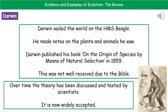He was saying that in natural selection we share a common ancestor with monkeys. People interpreted that and said we're not like monkeys, so they put his head on a monkey's body. But over time, this theory has been discussed and tested by scientists, and that's why natural selection is now widely accepted — because it has been tested and they can't fault it.